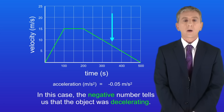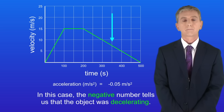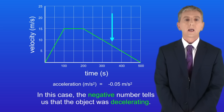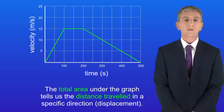Foundation tier students can stop watching here. Higher tier students need to continue. As we've seen, the gradient of a velocity-time graph tells us the acceleration. However, the total area under the graph tells us the distance travelled in a specific direction — in other words, the displacement.